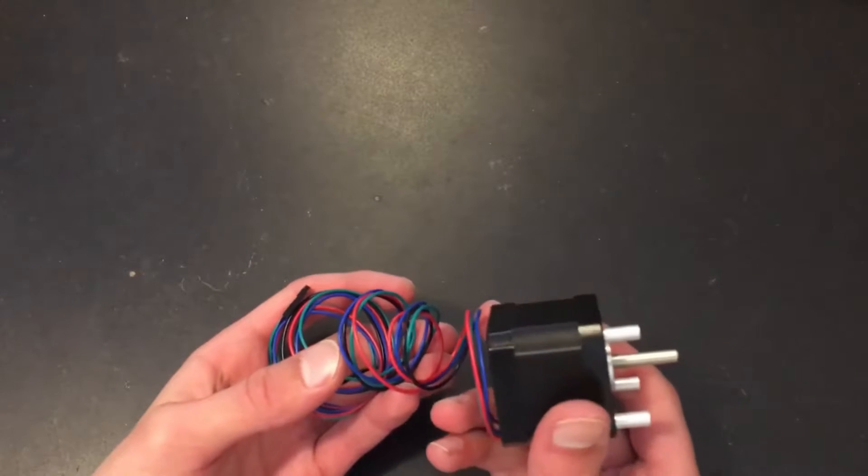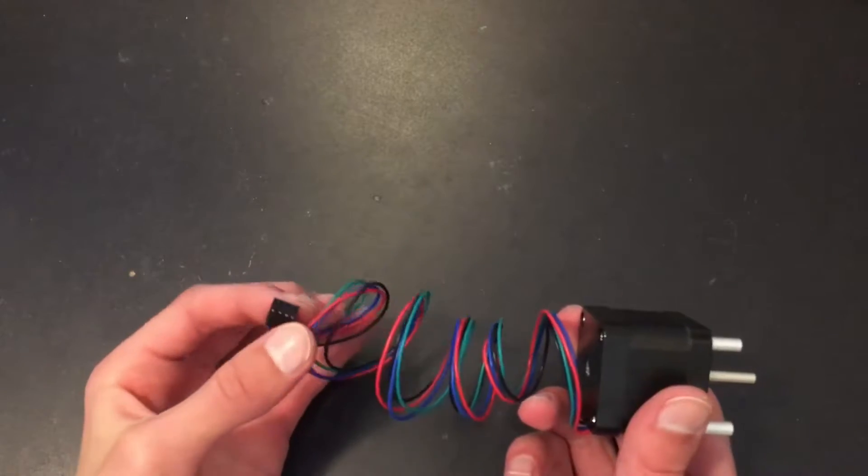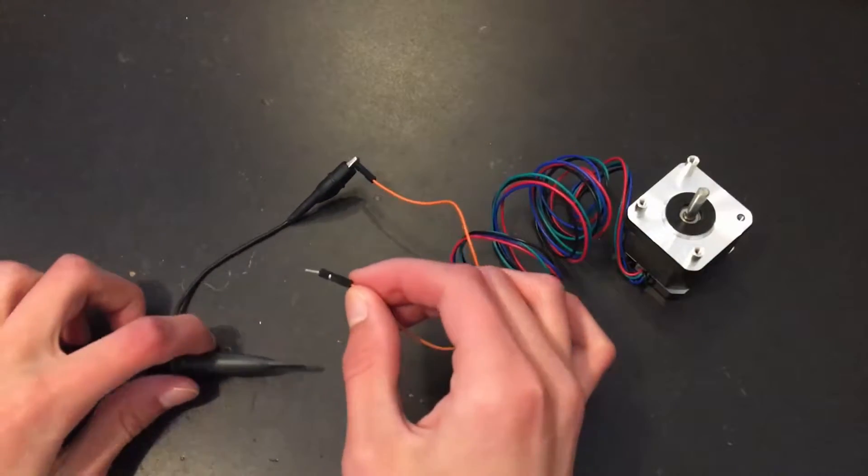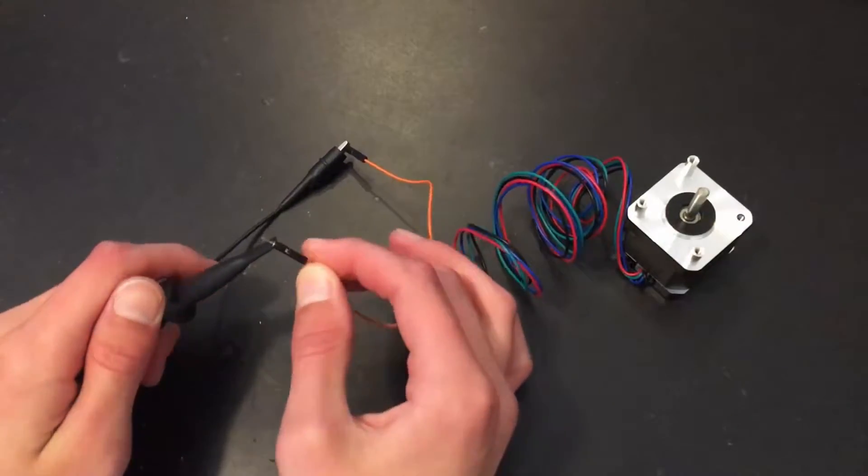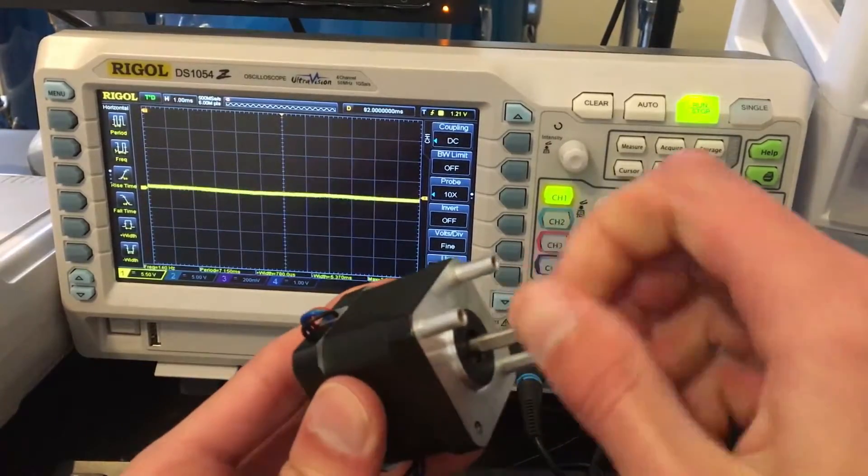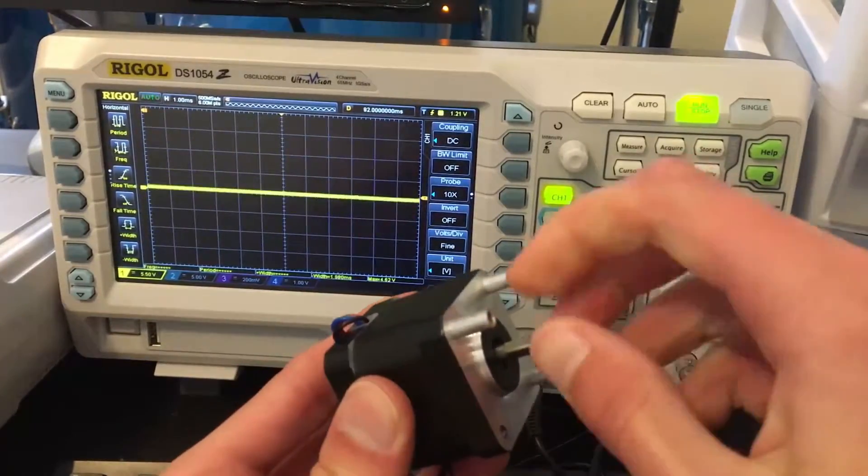Before we can build this hand crank generator, we need to understand what comes out of the stepper motor when you turn the shaft to turn it into a generator. To do this, we're going to hook it up to my oscilloscope. As you can see, when the motor shaft is turned, we get a nice beautiful sine wave on the output.